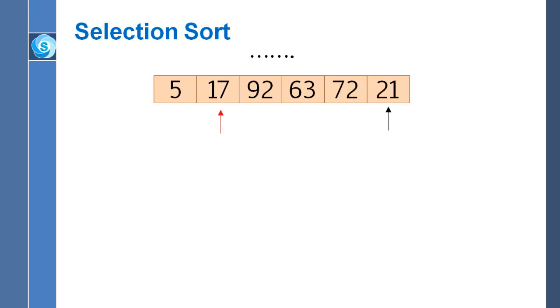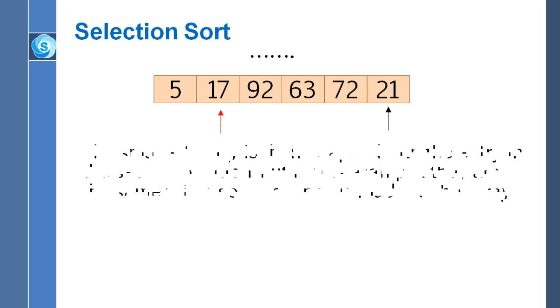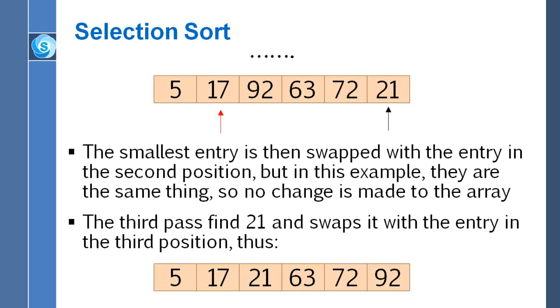So the time has come, as you would expect, to swap the entry that the red arrow is pointing to with the second position entry. But of course, in this example, they're the same thing. In general, we would be swapping whatever the red arrow points to with whatever's in the second position. But since that's exactly the same thing here, there's no change.